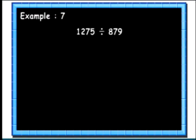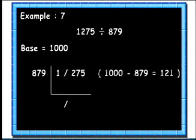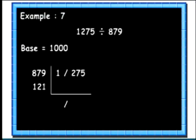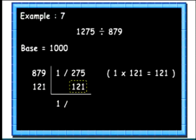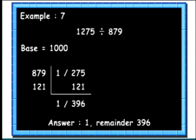Now we will take up a case of dividing a number by a 3-digit number close to 1000. Here we will divide 1275 by 879. Here we will take the base as 1000. Since the base is 1000, we will leave the last 3 digits in the dividend for the remainder stroke. Then we write 1000's complement of 879 below it. We bring down the first digit 1 and multiply it with the complement to get 121. We write this below the next 3 digits. Finally we add up for the remainder. So we get the quotient as 1 and remainder as 396.